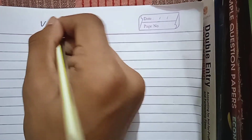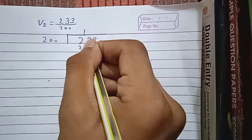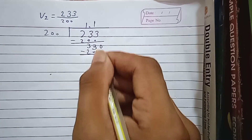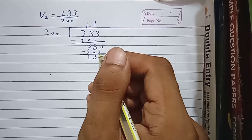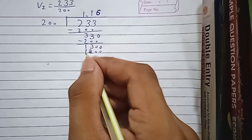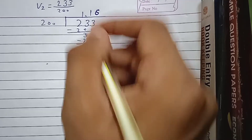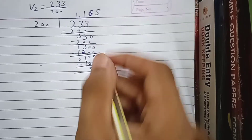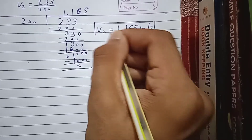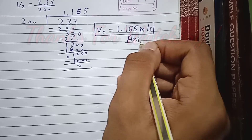So we had v2 = 233/200. Dividing 233 by 200: 200 goes into 233 once, remainder 33. Bringing down a zero gives 330, 200 goes once giving 130. Bringing down another zero gives 1300, 200 goes 6 times giving 1200, remainder 100 — but our division is complete enough. So v2 = 1.165 meter per second. This is our answer — the final velocity of the second object after the collision is 1.165 meter per second. I hope you liked the video, thanks for watching.